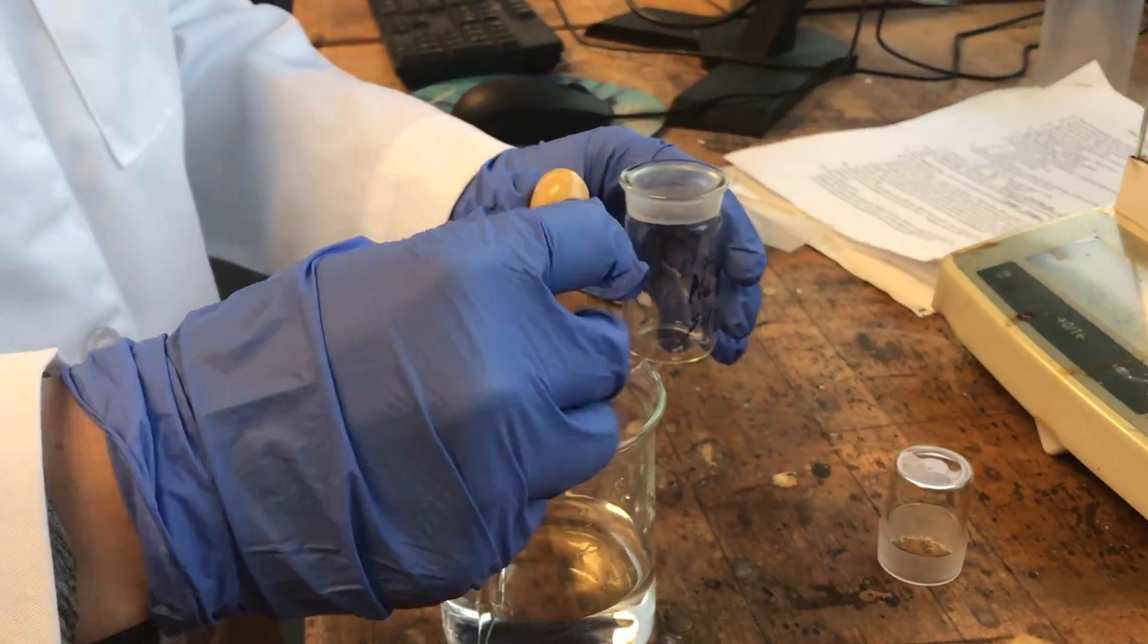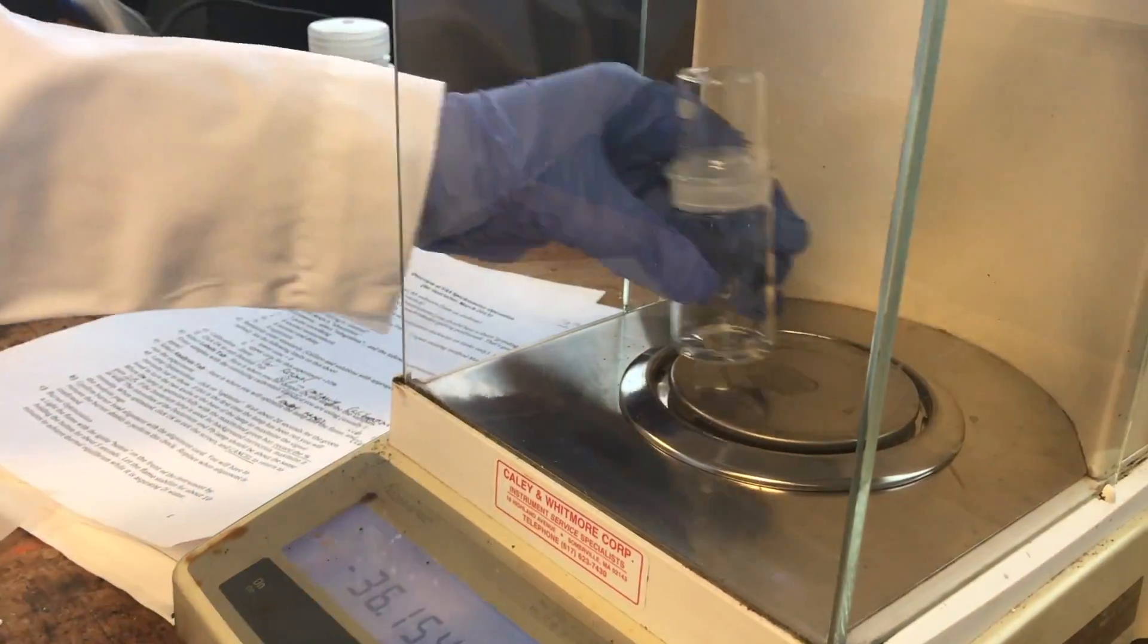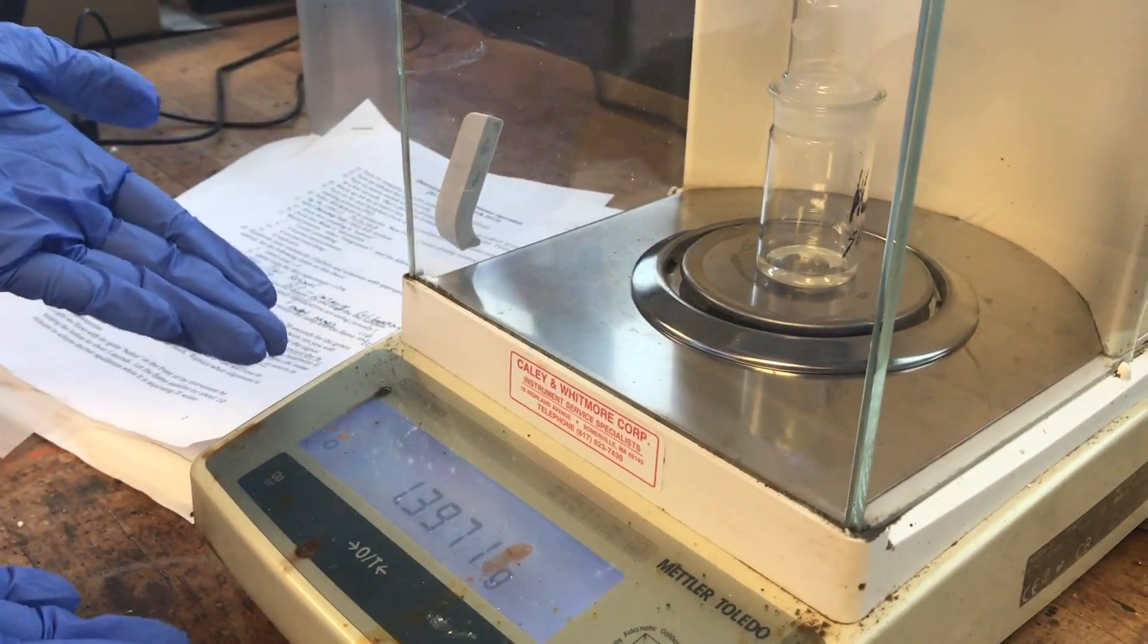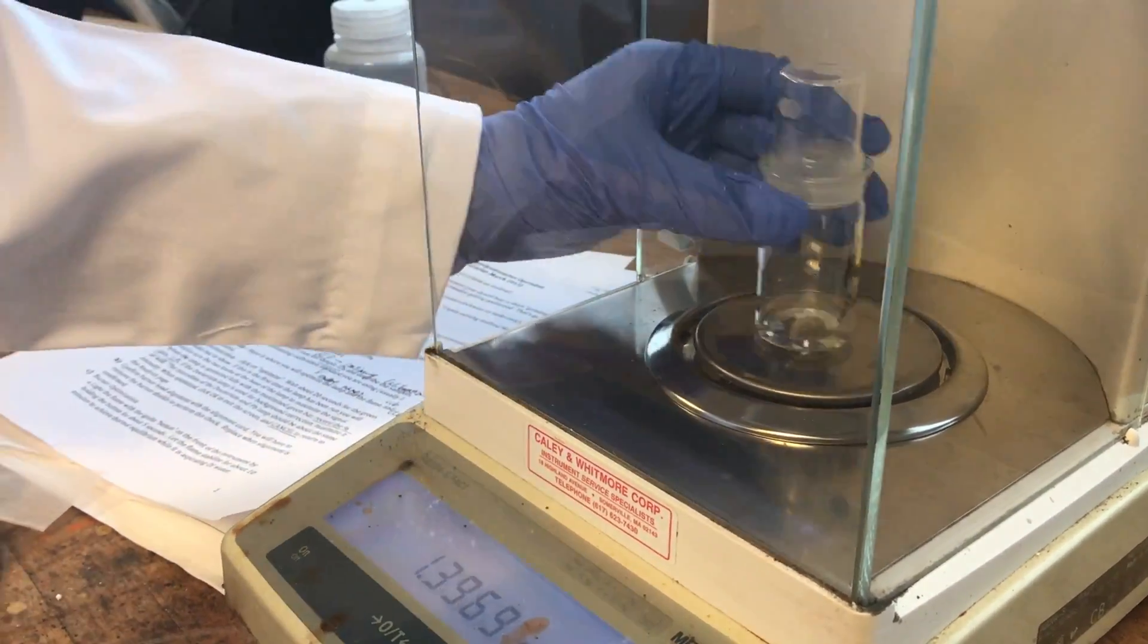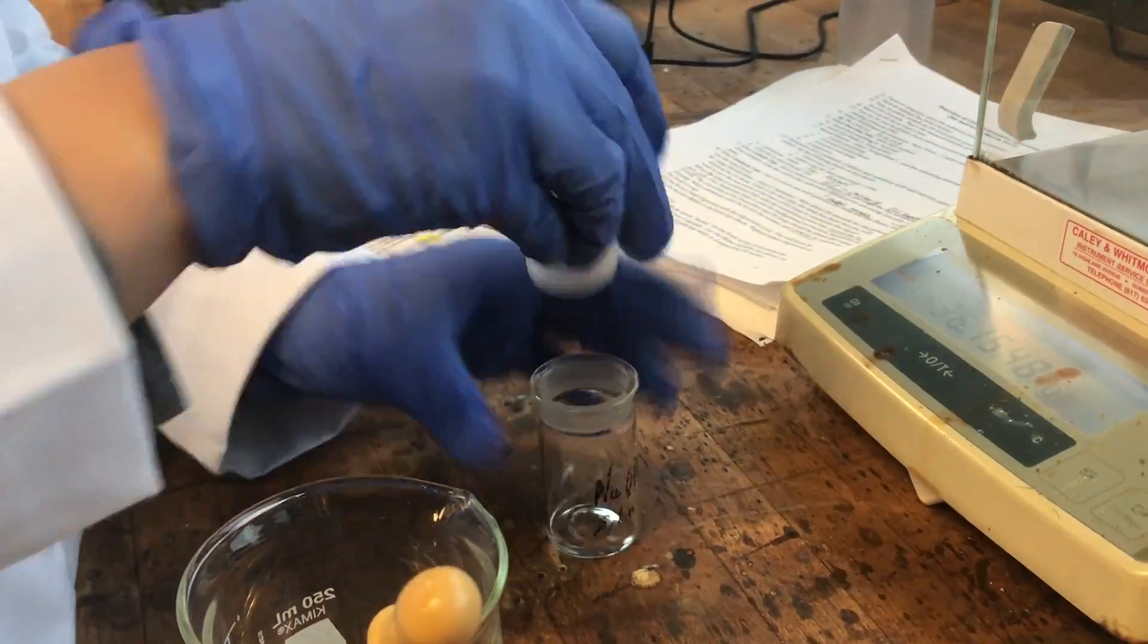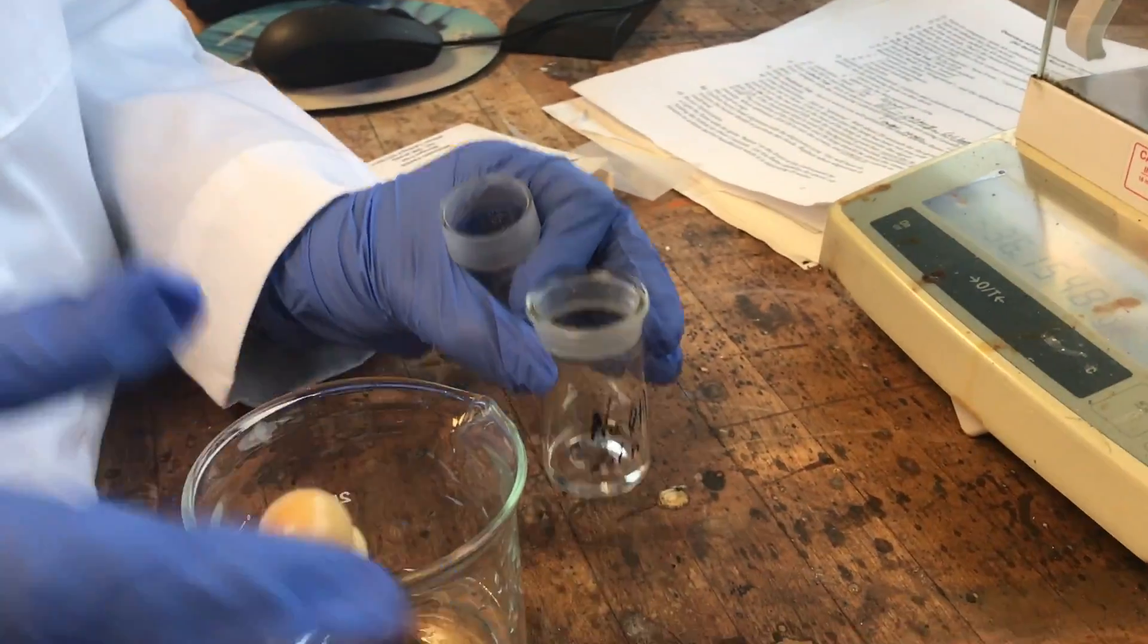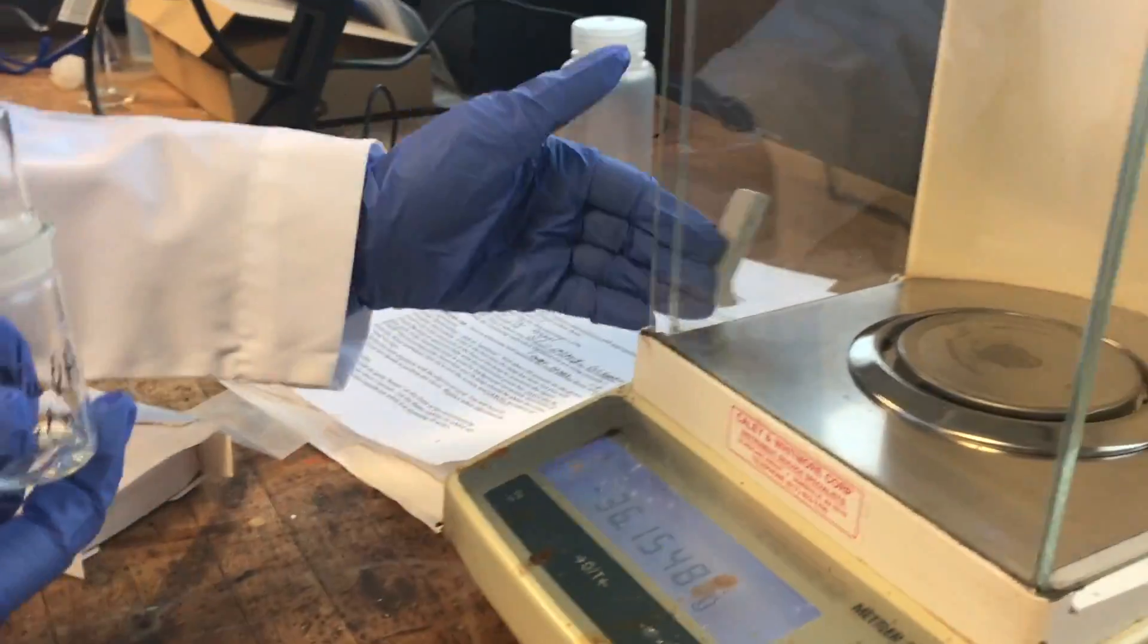Next, add the liquid to the weigh bottle. And then put the weigh bottle back on the scale. If you need to add more, make sure to remove the weigh bottle from the scale. Never measure directly on the scale.